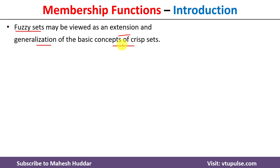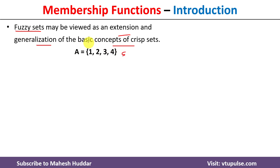A question comes in front of us: what is a crisp set? Let us say that we have been given a set A which has four elements: one, two, three, four. Each of these elements is either present in set A or not present. For example, one, two, three, and four are present in set A, while element five is not present. There are only two possibilities — element is present or not present. That is what is called the crisp set.